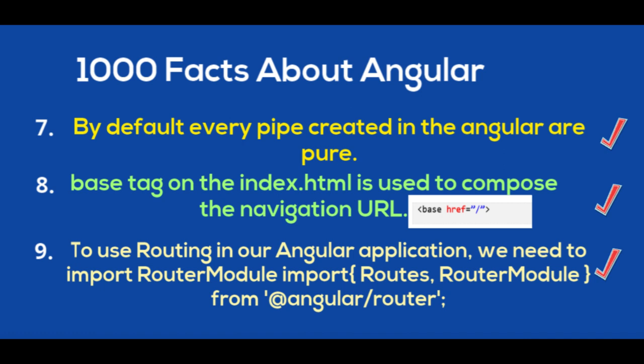The base tag on the index.html is used to compose the navigation URL, that is base href. When you host the application on IIS or any other server, you have to set the base href to its root directory where you intend to publish the application.